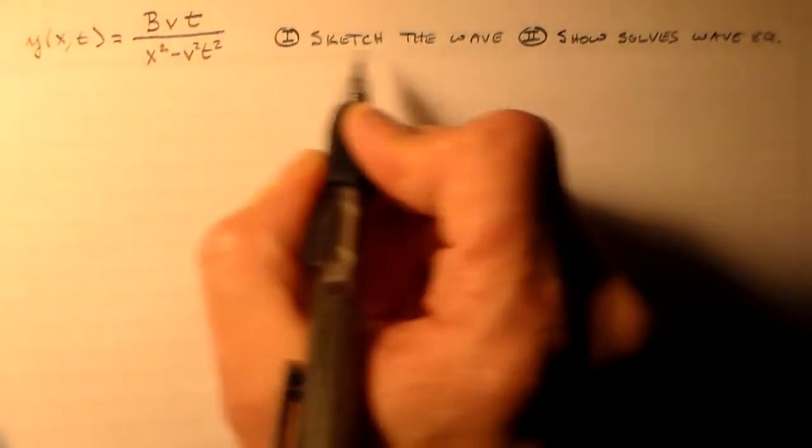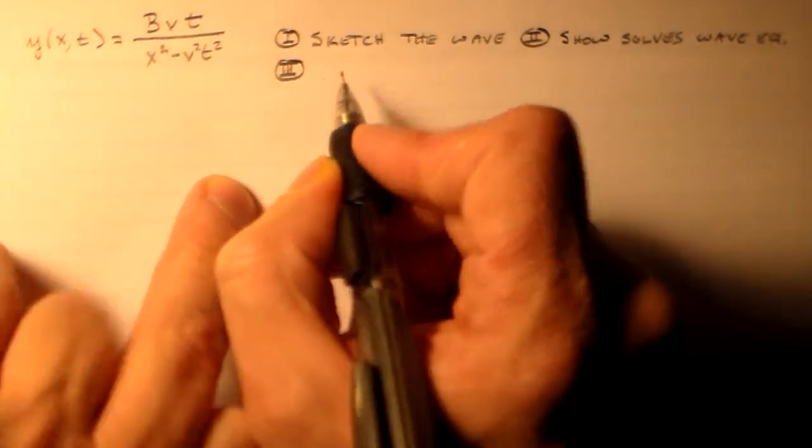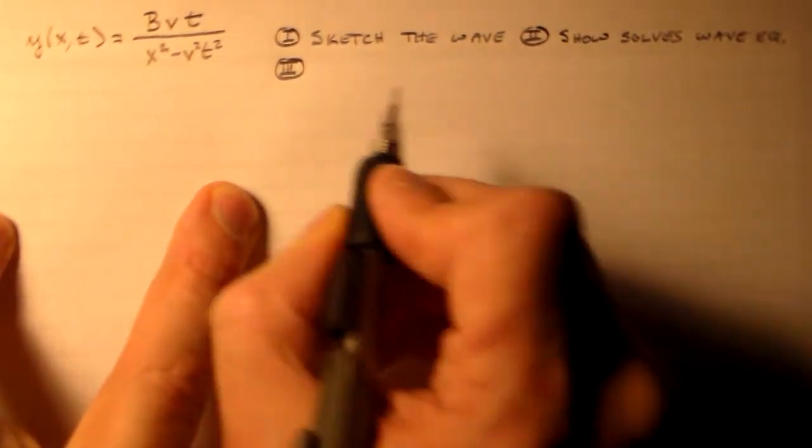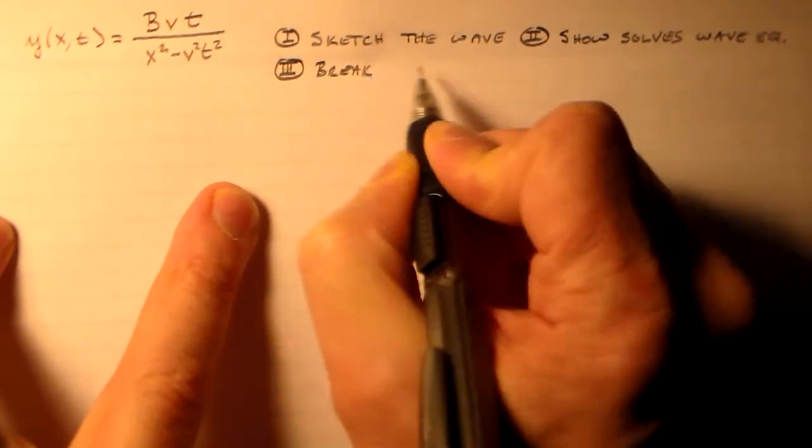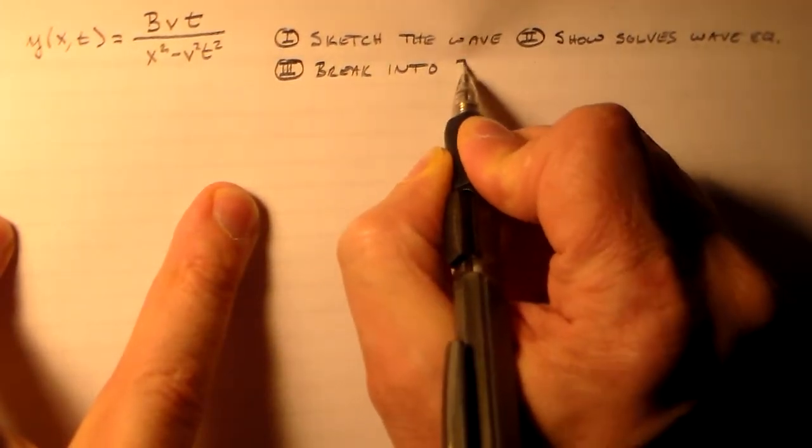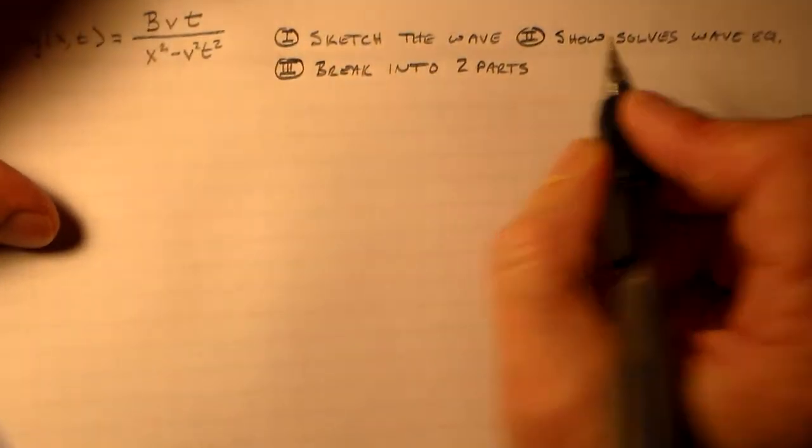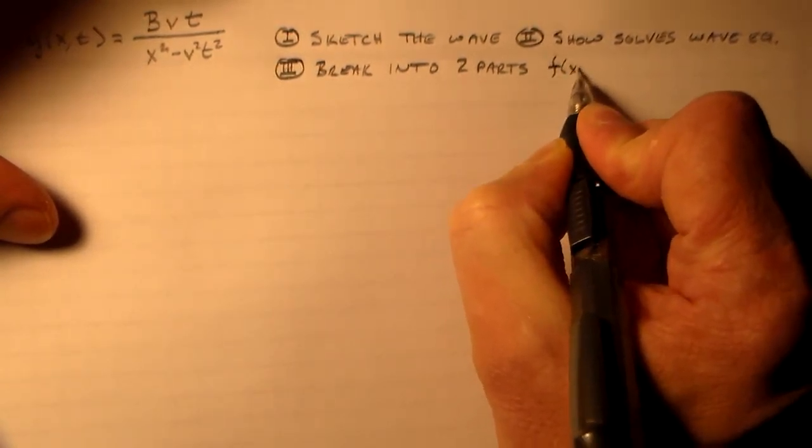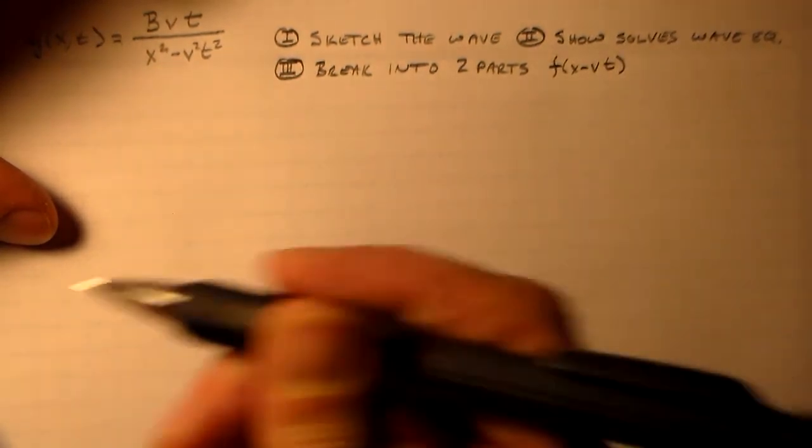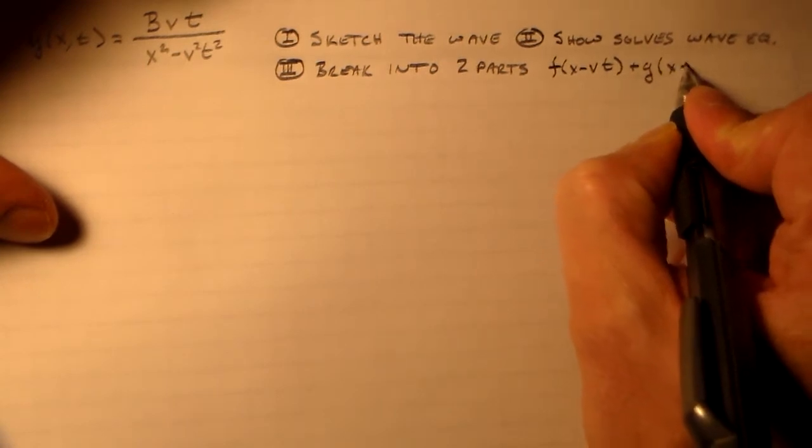And then three, the part that I didn't have you doing any of the problems on Wednesday, was to break it into two parts. And those parts would be, what would those parts be? f of x minus vt, so something traveling one way, plus x plus vt, which is traveling the opposite direction. Okay?